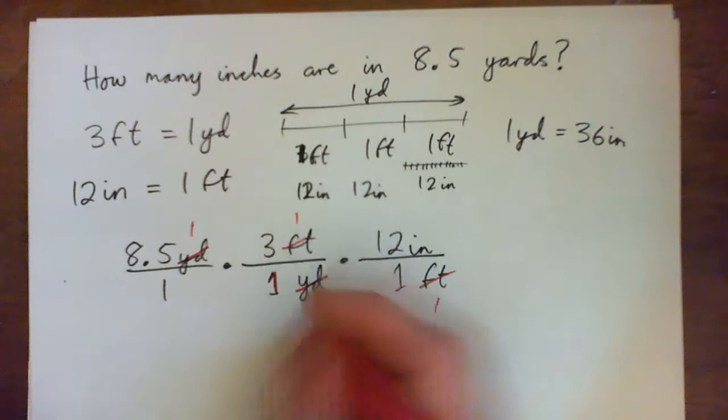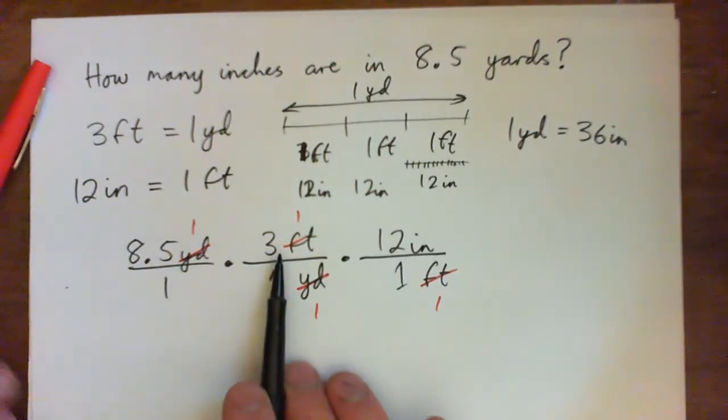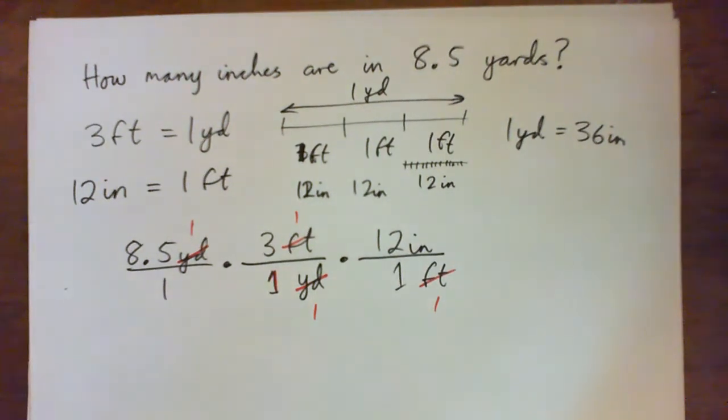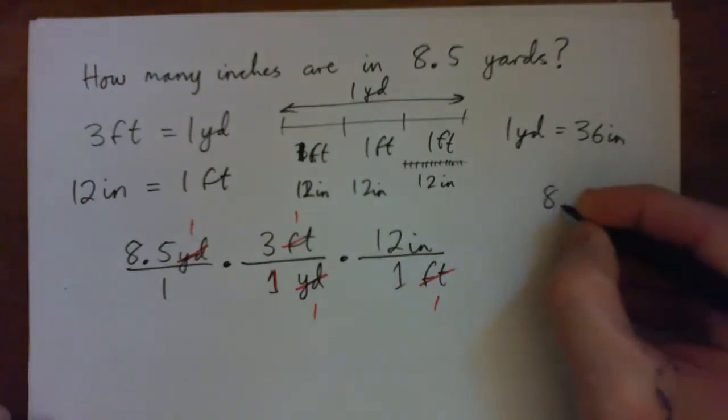See, one foot is equal to 12 inches. So if I cross cancel the feet here, we got my 25 and a half times 12 is the amount of inches that is. So the yards cross cancel, the feet cross cancel, now I'm in inches.